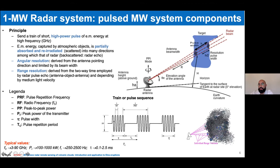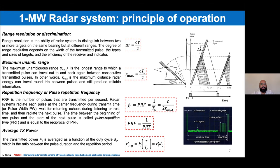The pulse width is very important because from this information we can define the resolution of a radar. When we talk about microwave radar, we talk about range resolution — the ability of a radar to detect two or more different targets in the same range beam. The maximum unambiguous range is the maximum distance the radar can observe a target, typically 100 to 200 kilometers from the radar site.